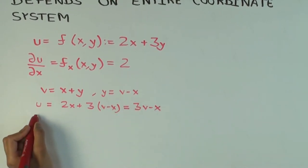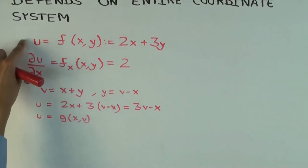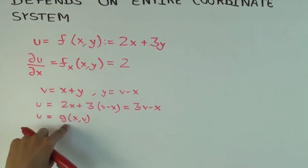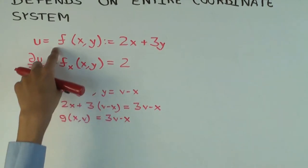And if I want I can write this as a new letter. So remember, the output variable I can use the same letter when I change the coordinates because it's still the same thing, u. But the function description is different. So I have to use a different letter, f versus g.